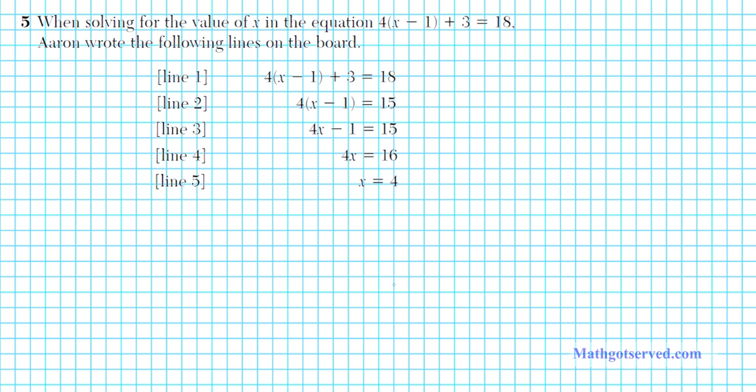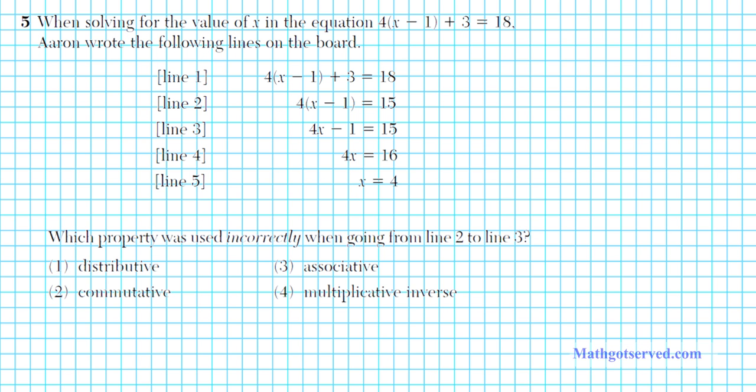Let's take a look at number five. When solving for the value of x in the equation 4(x - 1) + 3 = 18, Aaron wrote the following lines on the board. This is a problem about error analysis. Which property was used incorrectly when going from line two to line three? If we look at line two, what do we do to get to line three? We get rid of the parenthesis by distributing. We distribute the 4 to the x and distribute the 4 to the 1 also.